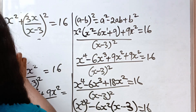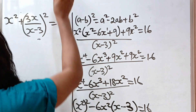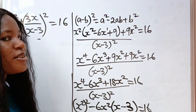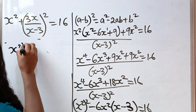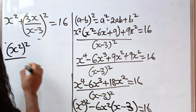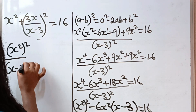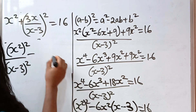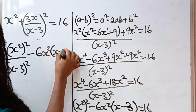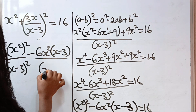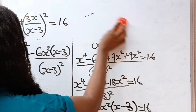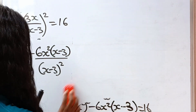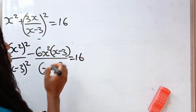Let us continue from this side. Now let us distribute this denominator for this and this. So what we have is x squared raised to the power of 2, divided by x minus 3 squared, then minus 6x squared bracket x minus 3, divided by x minus 3 squared. And this is equal to 16.